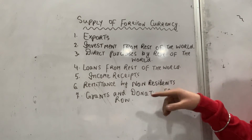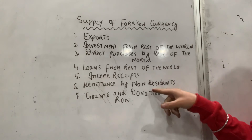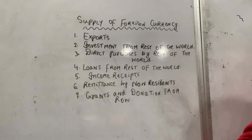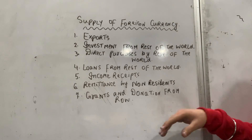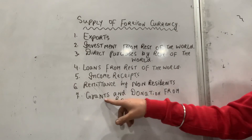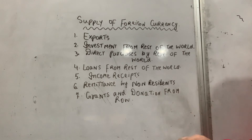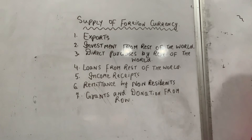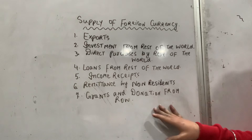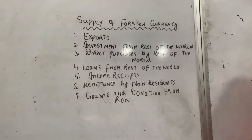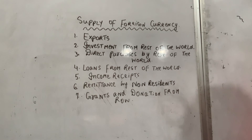The remittance by NRI — non-resident Indians will also send money. Their families will receive USD, and it will be converted into Indian currency. Grants and donations from the rest of the world are also a source — for example, during the Kerala floods, a lot of aid came from abroad. So this topic is supply of foreign currency.